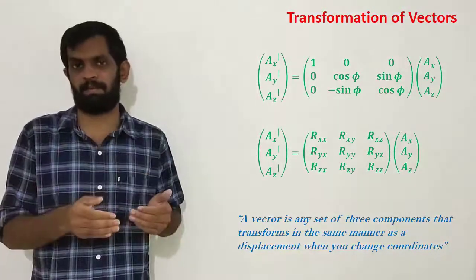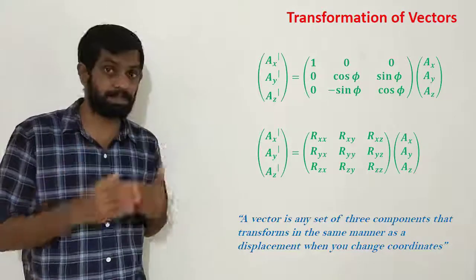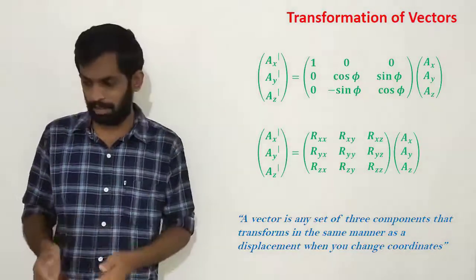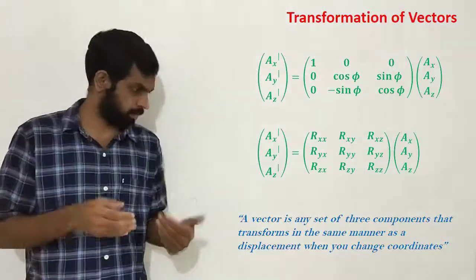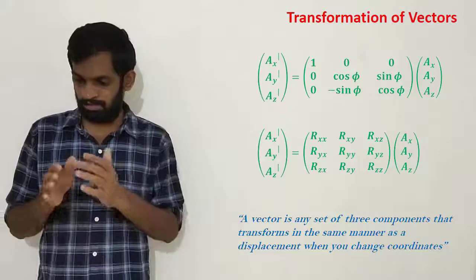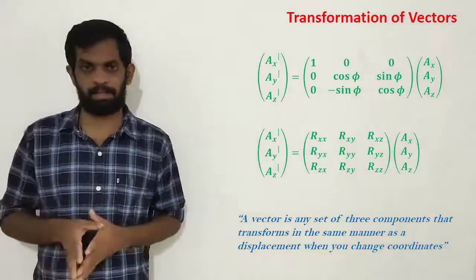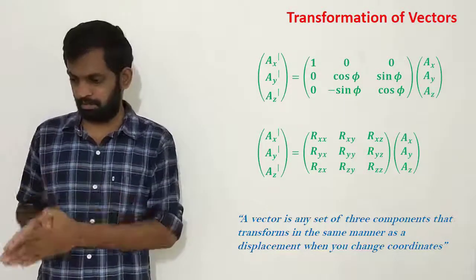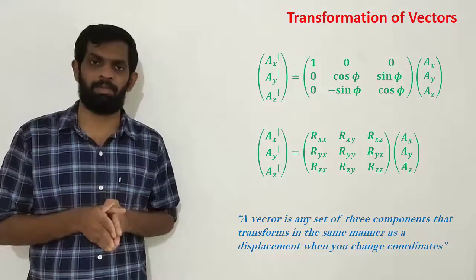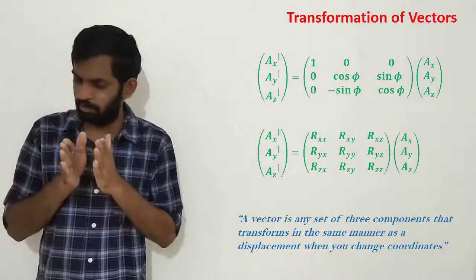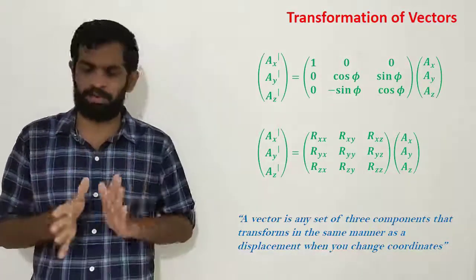A vector is any set of three components that transforms in the same manner as displacement when you rotate your axis — when you change your coordinate system.